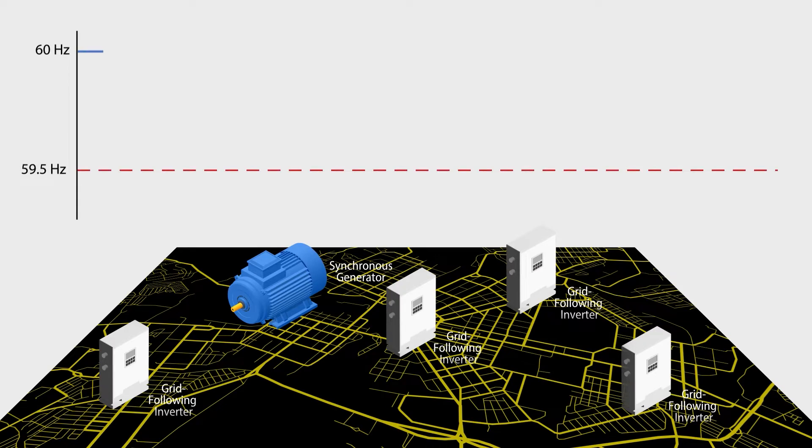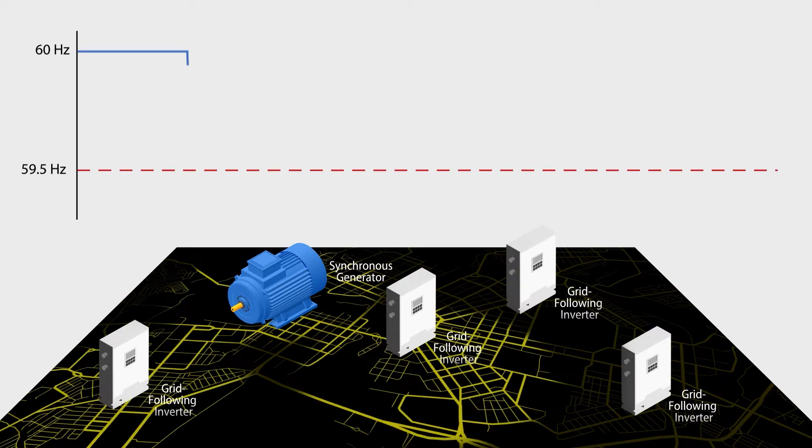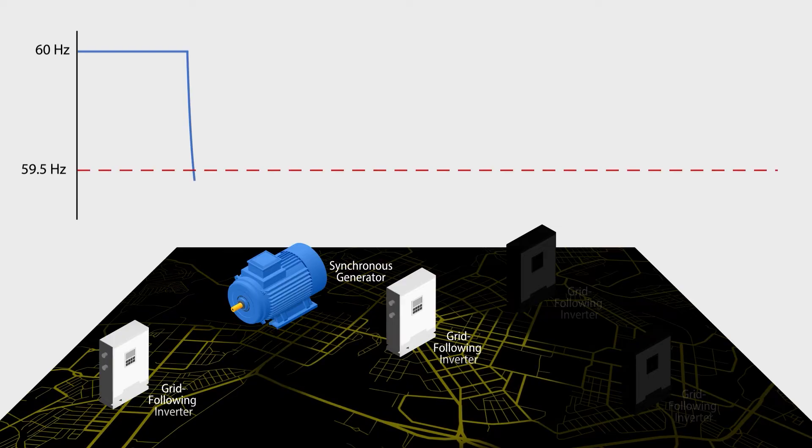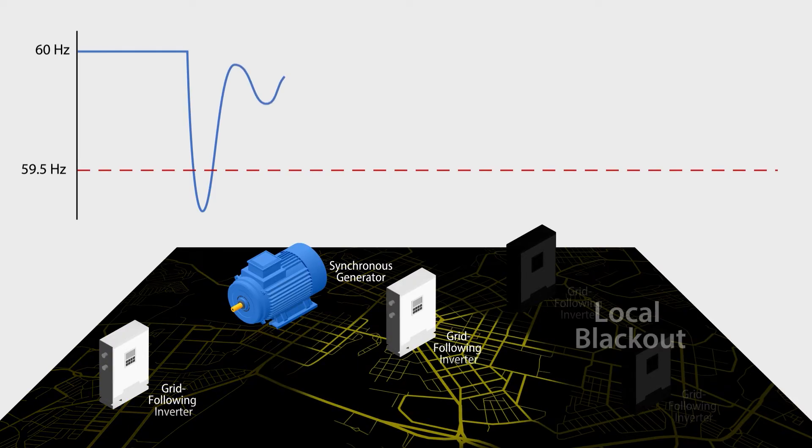Imagine that an inverter trips during a storm. This causes the frequency to drop quickly, while the remaining generators and inverters try to stabilize the grid. As the frequency drops below 59.5 Hz, the grid automatically begins an emergency recovery scheme.